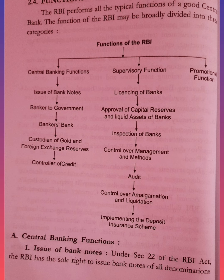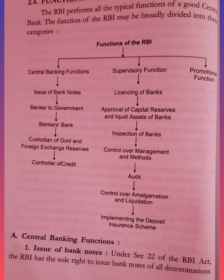Under central banking functions, the first sub-function is the issue of bank notes. The RBI has the sole right to issue bank notes of all denominations except one rupee notes, under Section 22 of the RBI Act. This gives the RBI complete and uniform control over the currency and credit system of the country. Thus, except the one rupee note, all other notes are printed by the RBI.